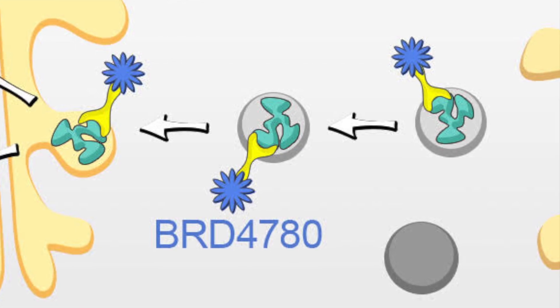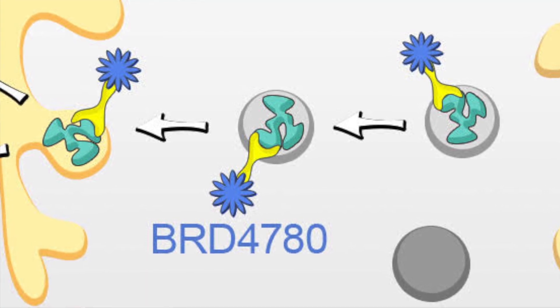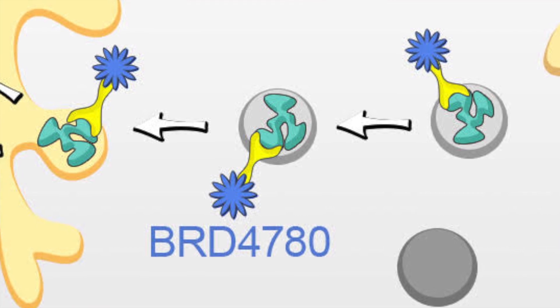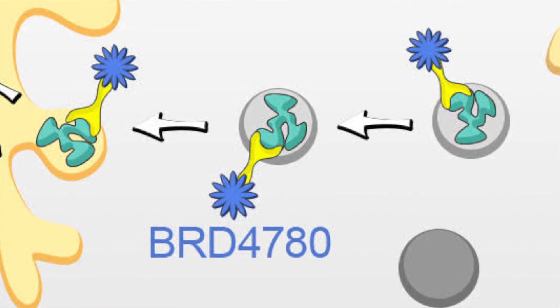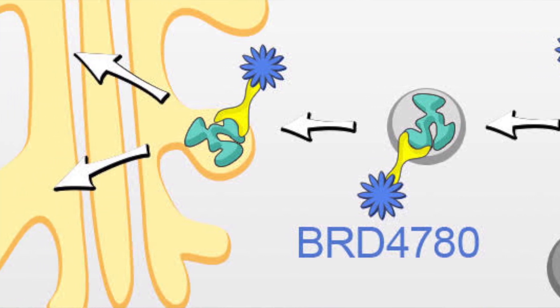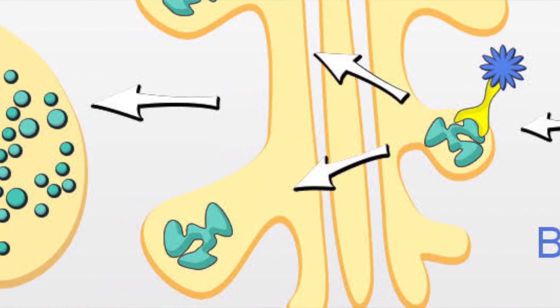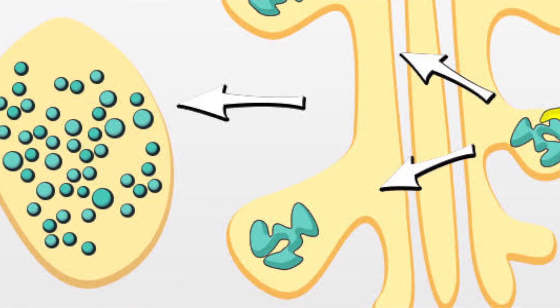BRD4780 physically binds the cargo receptor TMED9. By this binding, the mutant frameshift MUC1 protein is released from the vesicles and can be moved forward along the secretory pathway, eventually getting into the lysosome, where it is degraded and removed from the cells. The mechanism by which a misfolded protein is trapped together with the cargo receptor TMED9 is a novel mechanism of action for retention of misfolded proteins.